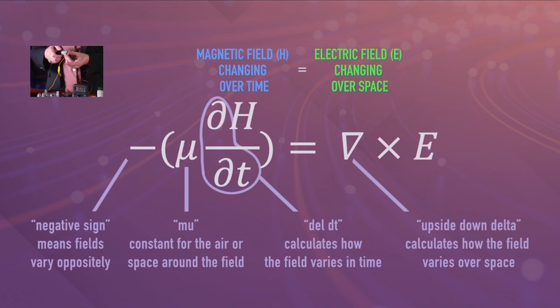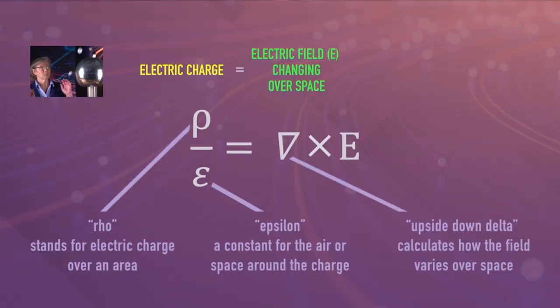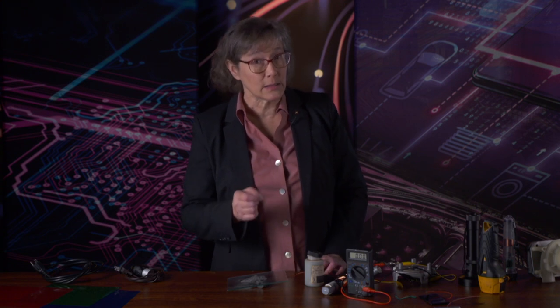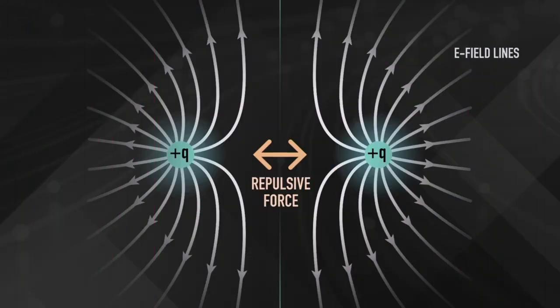Second, the generator demo showed that a magnetic field changing over time produces an electric field that changes over space — this is something Michael Faraday first noticed in 1831. Third, the Van de Graaff generator demonstrated that electric charges give rise to an electric field that varies over space, strongest near the electric charge and getting weaker as the distance increases. Each charge creates an electric field, and because the charges are the same polarity, the fields oppose each other, causing a force to be generated between them.